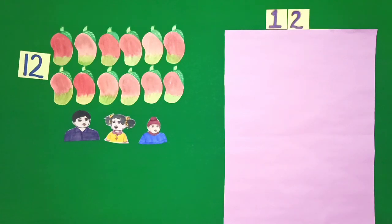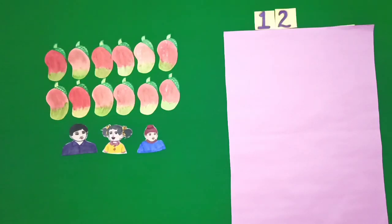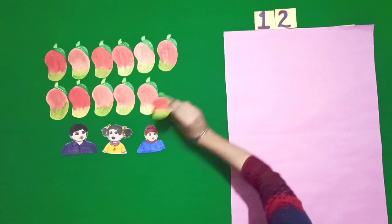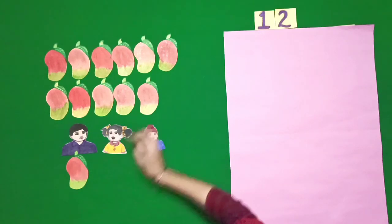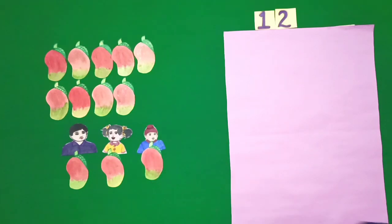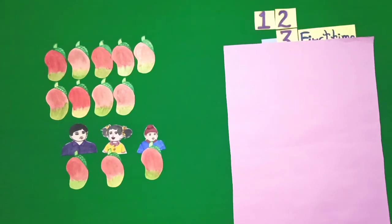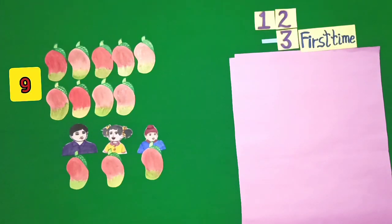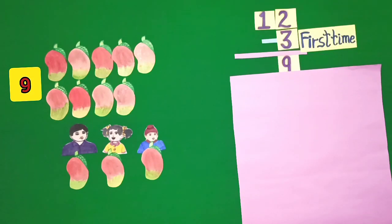Students, I have to divide 12 mangoes among 3 children. First of all, I give 1 mango to Aman, 1 mango to Harman and 1 mango to Raman. Students, first time out of 12 mangoes, give 1 mango to each child, we are left with 9 mangoes.